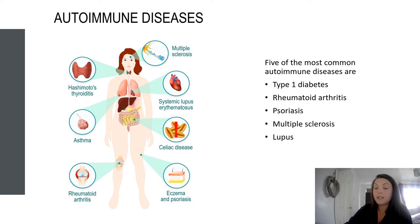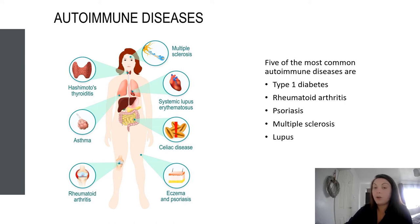Another common autoimmune disease is multiple sclerosis, or MS, defined by the NHS as a condition that can affect the brain and spinal cord, causing a wide range of potential symptoms including problems with vision, arm or leg movement, sensation or balance. There are two types of multiple sclerosis, with the most common being relapsing-remitting MS, which presents as episodes of new or worsening symptoms before slowly improving. Treatment for MS includes a short course of steroid medicine and treatment of specific symptoms such as problems with bladder control and muscle stiffness.